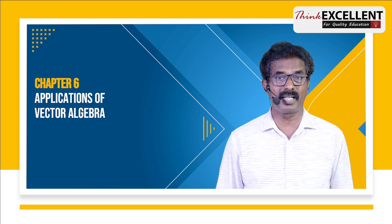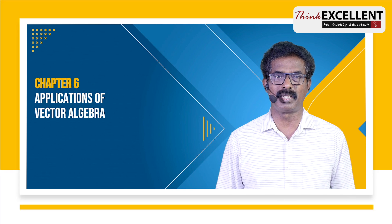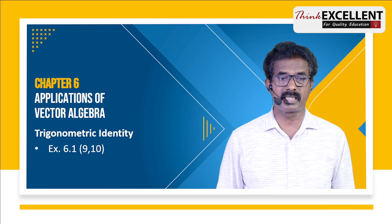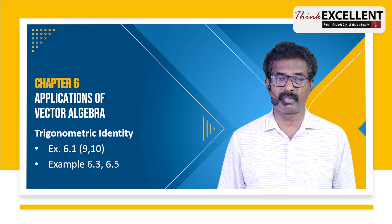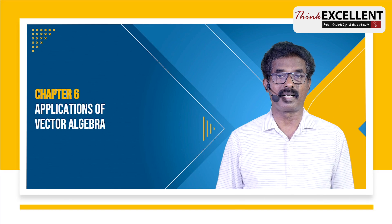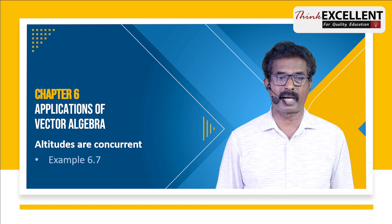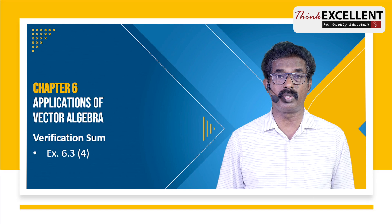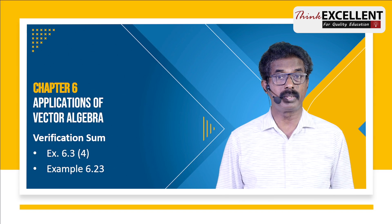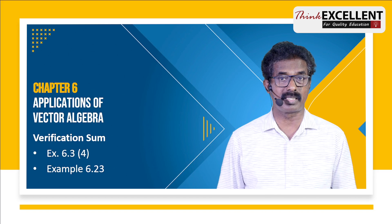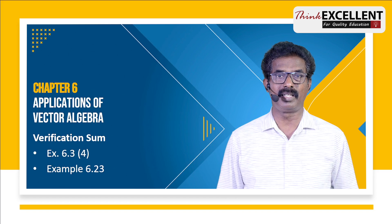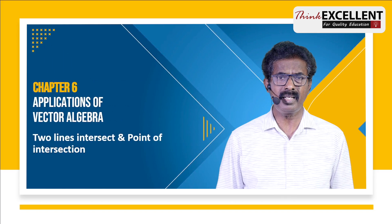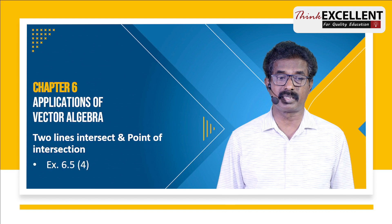Chapter 6: Applications of Vector Algebra. Very easy. First, trigonometric identity proofs — 4 questions. Exercise 6.1, questions 9 and 10, and examples 6.3 and 6.5. Then prove that the altitudes of a triangle are concurrent — they pass through the same point. Exercise 6.1, example 6.7. Study vector identity verification sums like A cross (B cross C) and A cross D — you can practice and answer them. Exercise 6.3, question 4, example 6.23. Then prove that two lines intersect and find the point of intersection — exercise 6.5, question number 4.